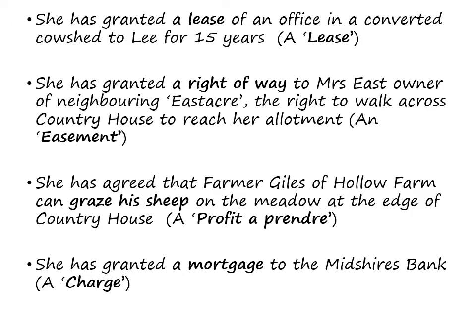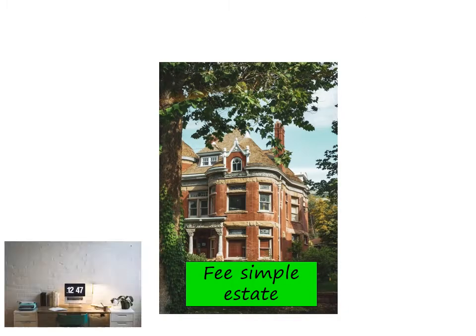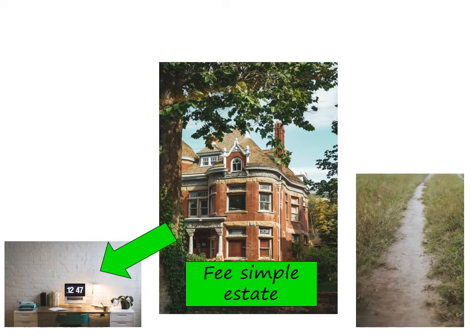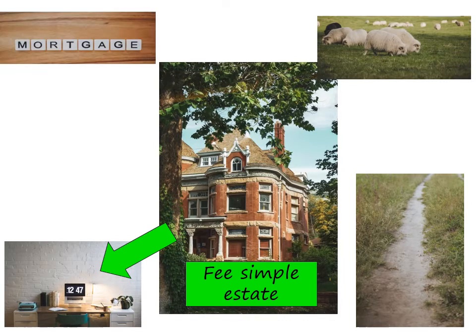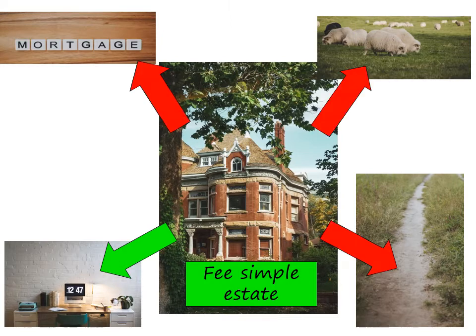We have Lee's lease, which is an estate, and we have the right of way — an easement — the right to graze sheep on the land, a profit, and a mortgage, which is a charge. They are known as interests in the land, because we wouldn't think of Mrs. East and Farmer Giles and the bank as being owners of the land.